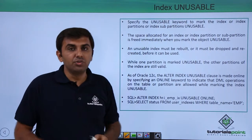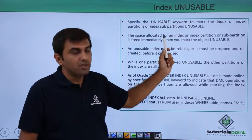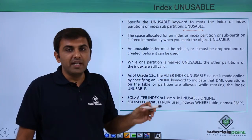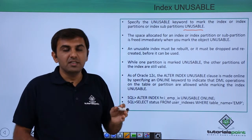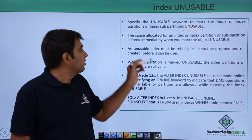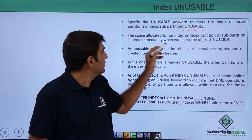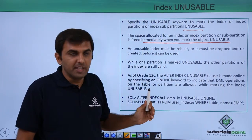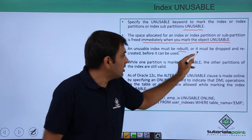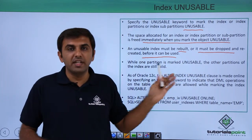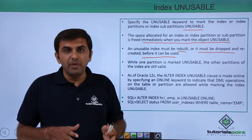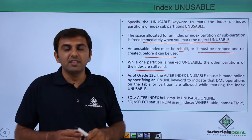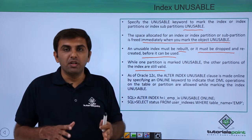Next is index unusable. Specifying the unusable keyword marks the index, index partition, or index sub-partition as unusable — it will not be used when selecting data from the table. The space allocated to that index is freed immediately when you mark it unusable. The unusable index must be rebuilt, or dropped and recreated, before it can be used again. While one partition is marked unusable, other partitions of the index remain valid and are not affected.